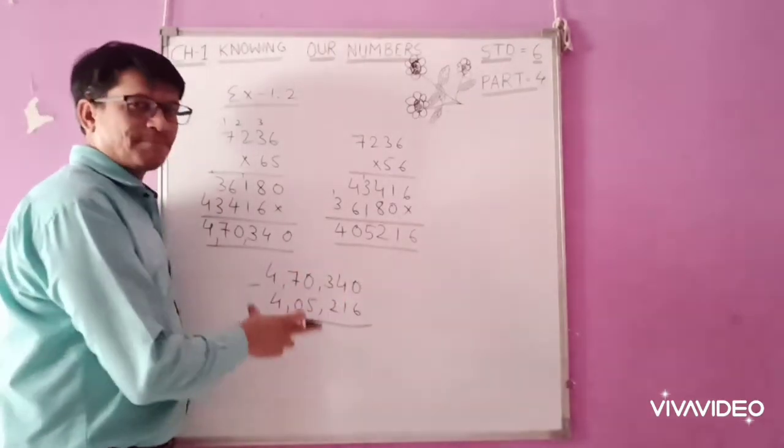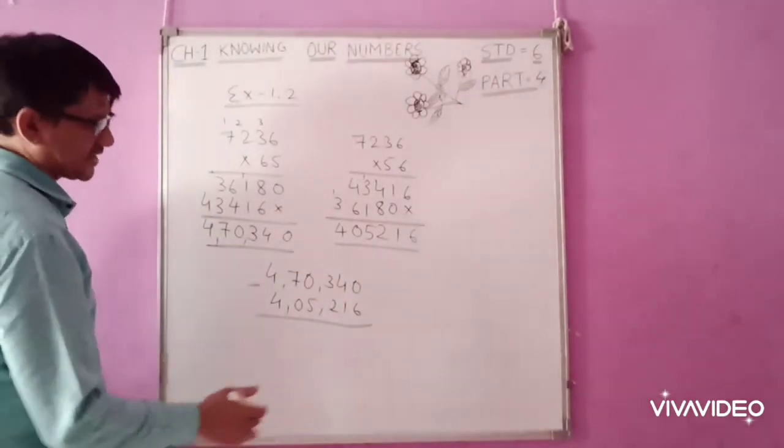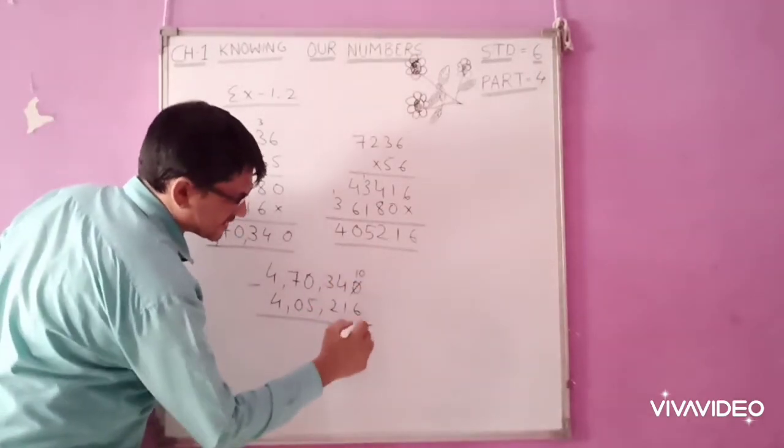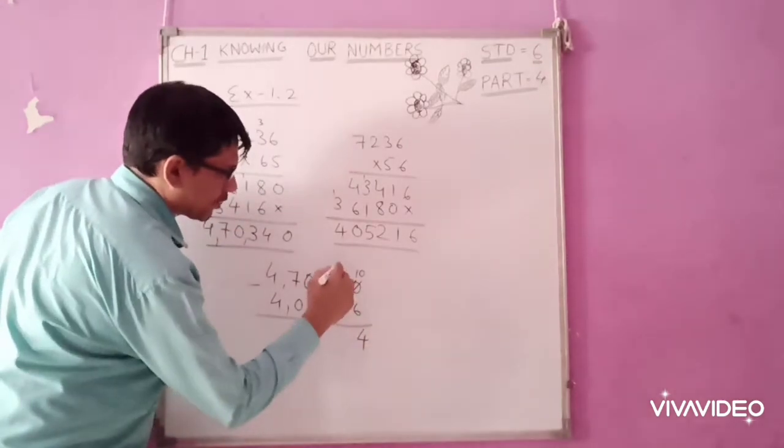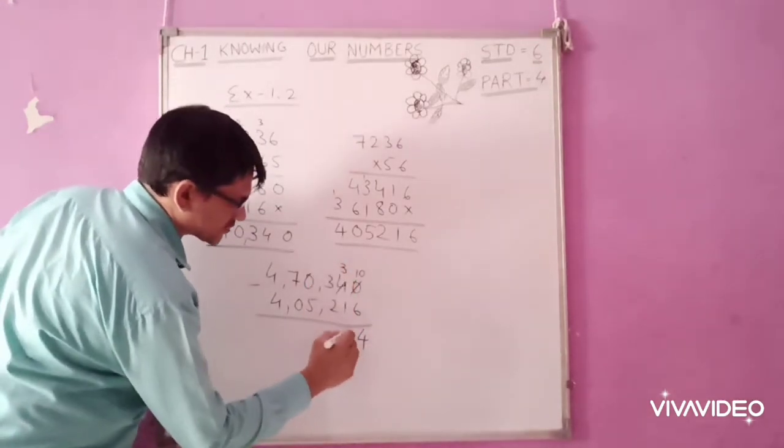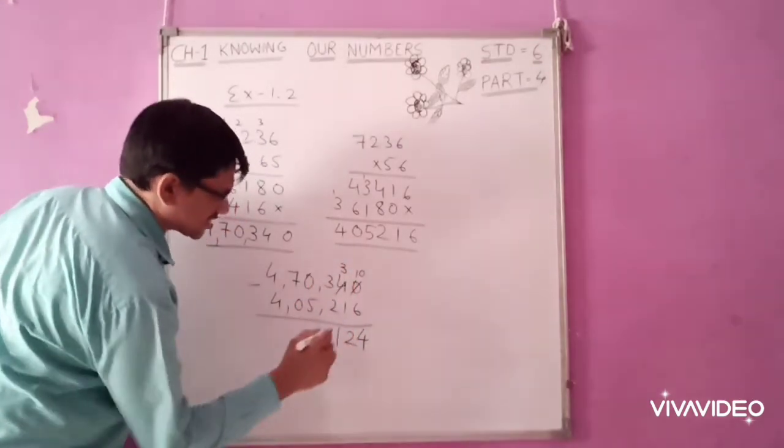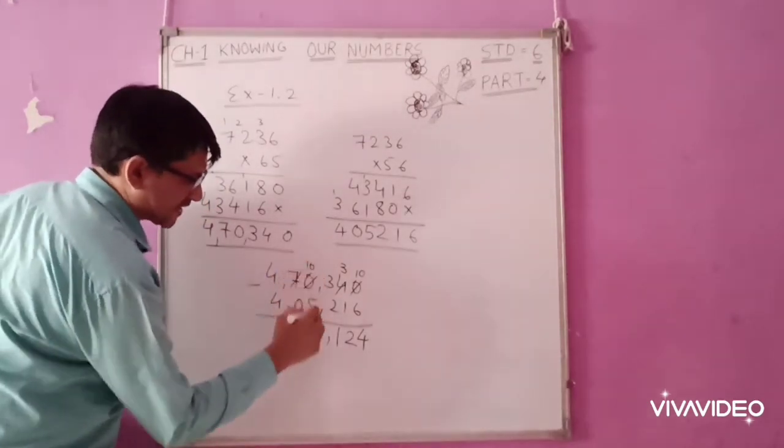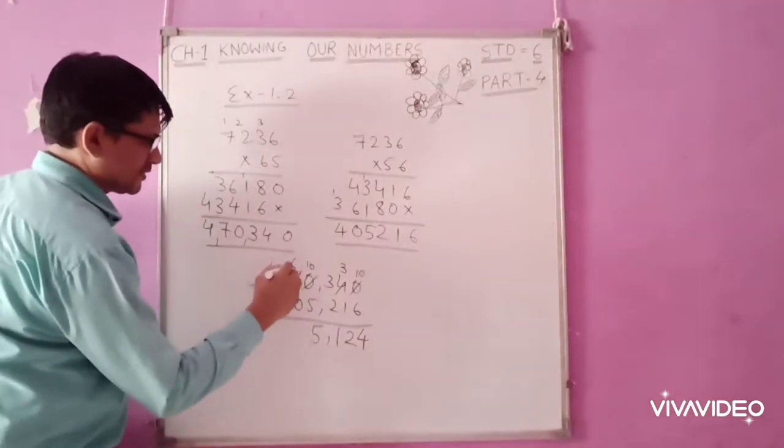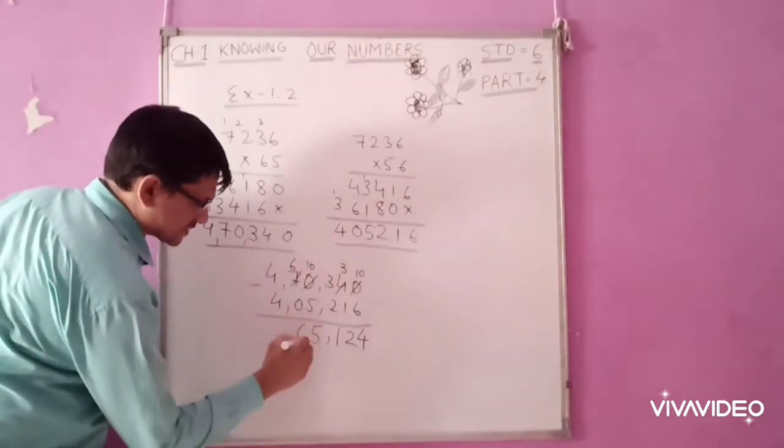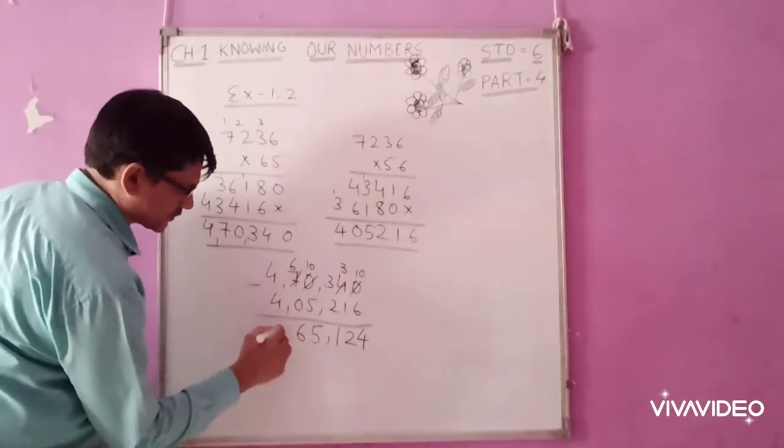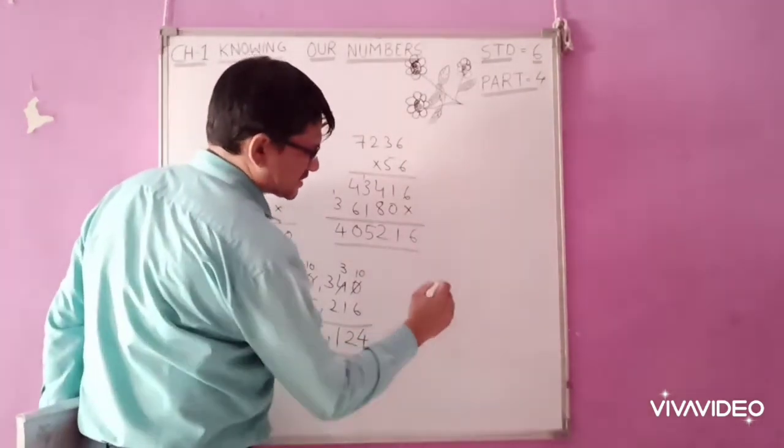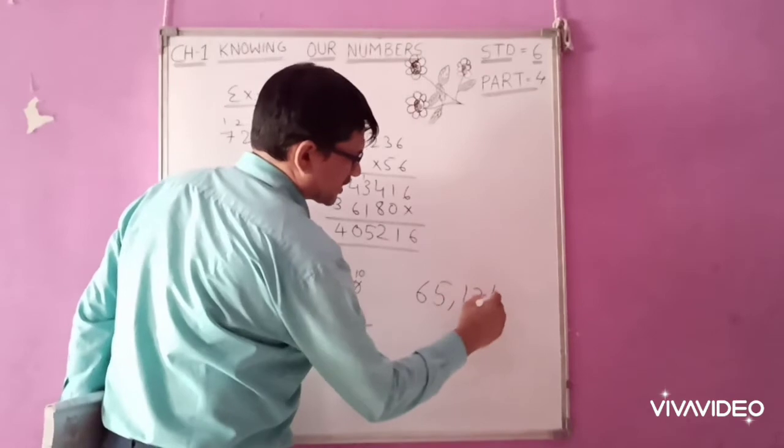That means you have to subtract the numbers and find the answer. 0, 6 not possible. So 10, 6, 4. Borrowed from here, so 3, 1 is 2. 2, 1 is 1. 0, 5 not possible. 10, 10, 5 is 5. 6, 0 is 6, 0. 4, 0 is 0. So the answer was greater by 65,124.